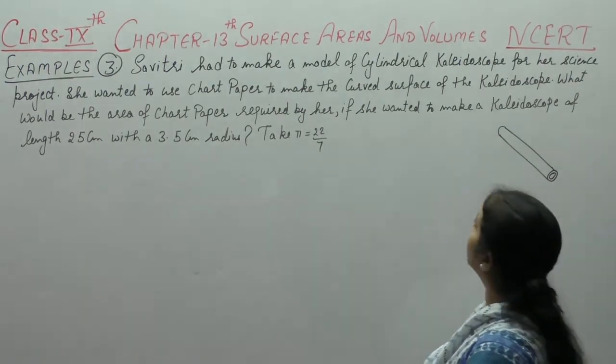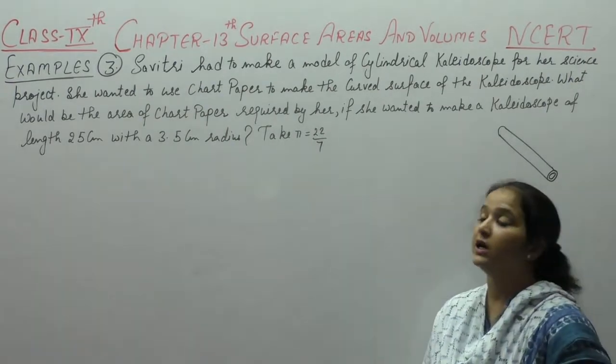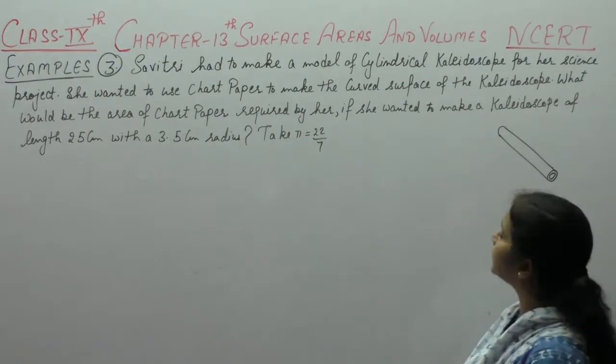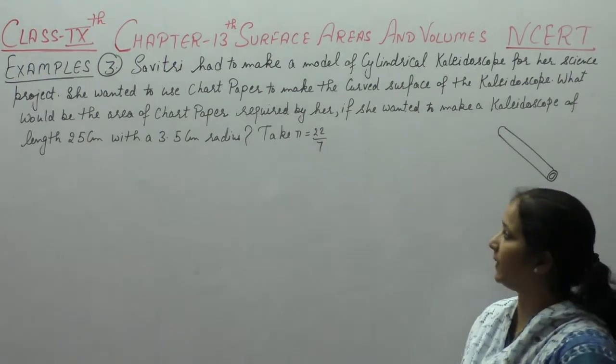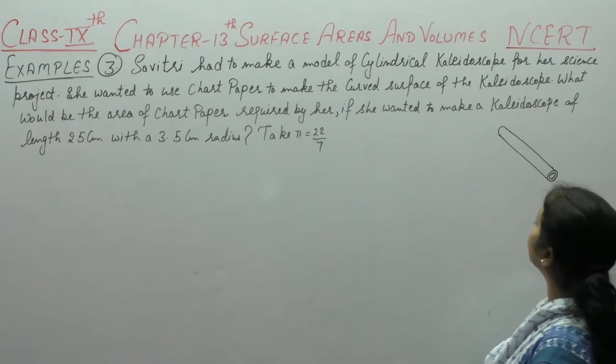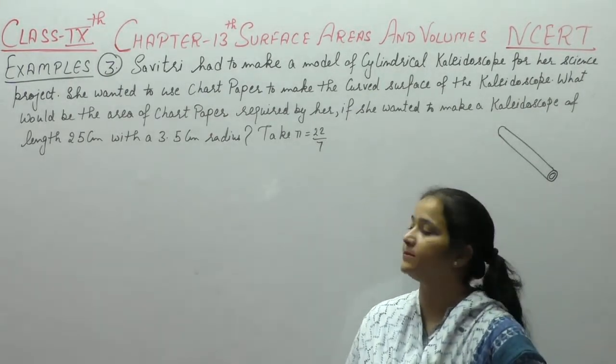Savitri had to make a model of cylindrical kaleidoscope for her science project. She wanted to use chart paper to make the curved surface of the kaleidoscope. What would be the area of chart paper required by her if she wanted to make a kaleidoscope of length 25 cm with a 3.5 cm radius?